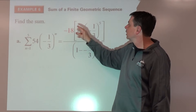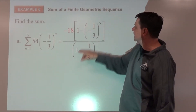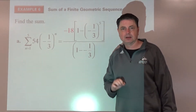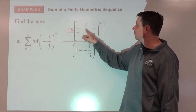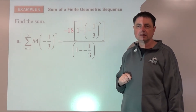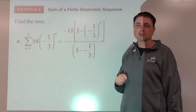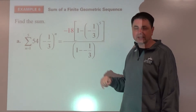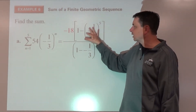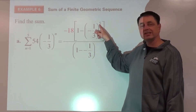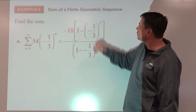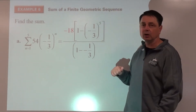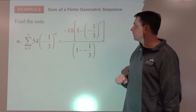Now apply the formula: a-sub-1 times one minus r to the n, divided by one minus r. Be very careful — many people want to change minus minus into plus, but that depends on the exponent. I suggest not doing that here. Use order of operations: raise negative one-third to the fifth power. A negative raised to an odd power stays negative; raise both numerator and denominator to the fifth power.